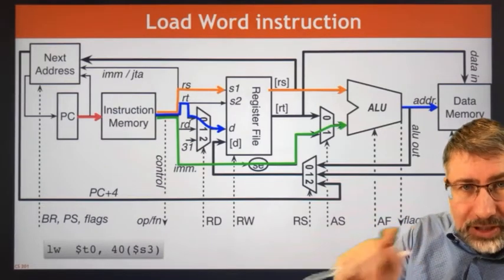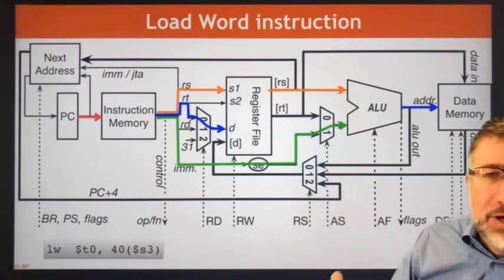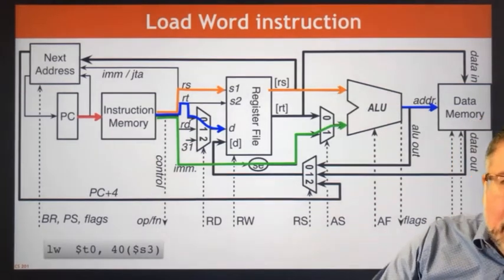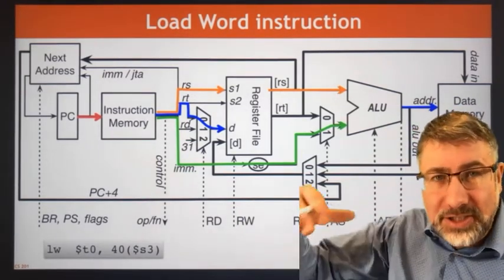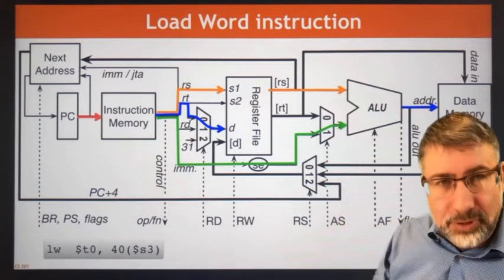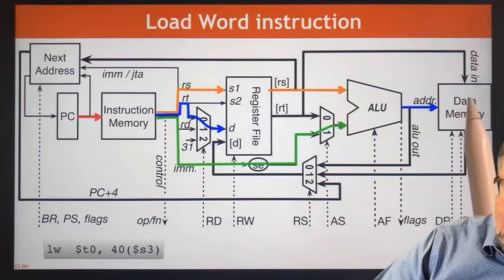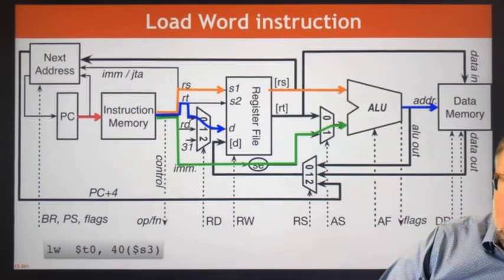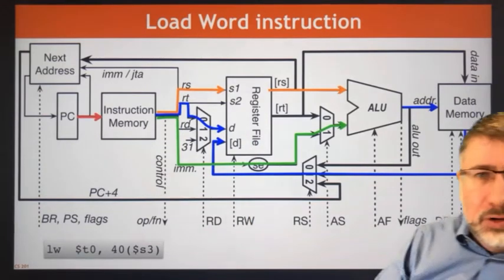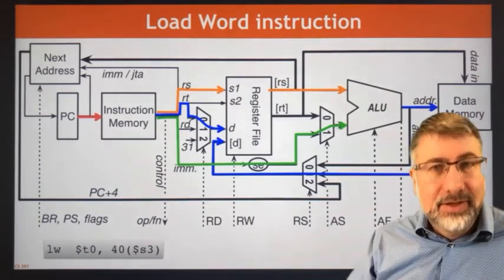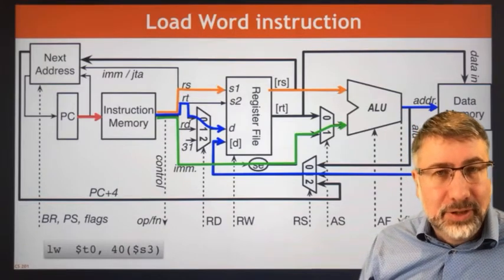For load, we want to take the value from the data memory and put it into RT. RT specifies the data register, so RT is where we put the result. We use the effective address to address data memory, load the word, and that word is presented back to RD and stored in the register file — loading from memory into the register file. The memory address is calculated by the immediate value plus RS.